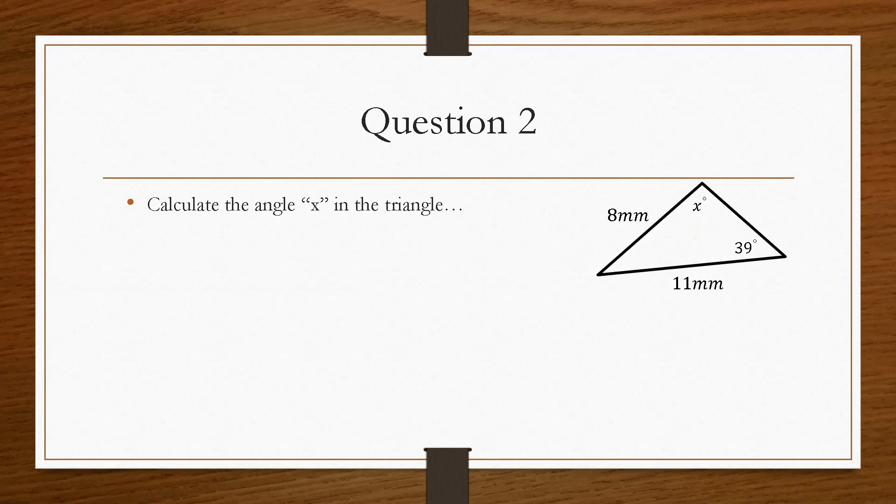Question number two: instead of finding the length this time, we are going to find the missing angle. So it's the same process as before. We write out the equation and then we go to label.